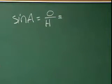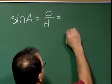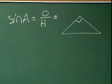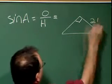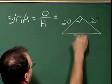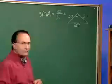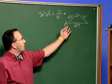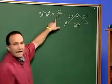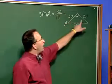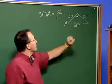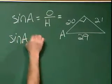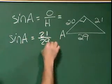Let me draw that diagram. We have a triangle in which the right angle is at the top. We know that one side is 21, another side is 20, and the hypotenuse is 29. The angle A is at the bottom. So when we want the sine of angle A, we want the side opposite it, which is 21, over the hypotenuse. The sine of A is 21 over 29.